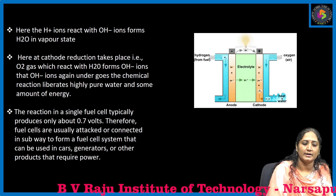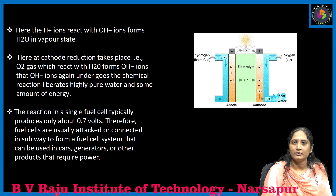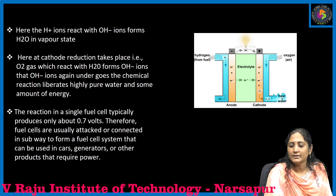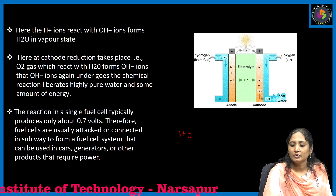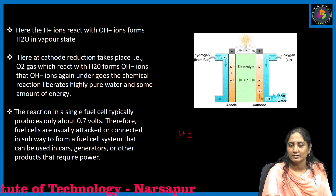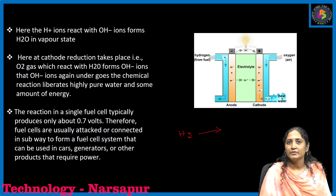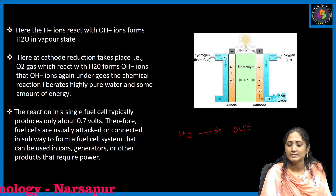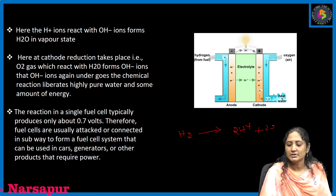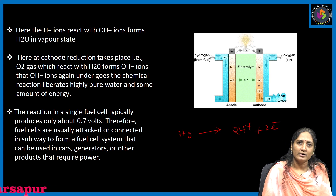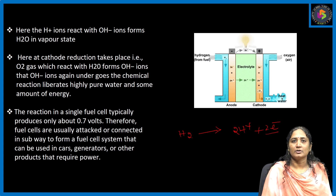Before going to explain the chemical reactions, what is the basic principle involved? Whenever we pass H₂ gas, this H₂ gas goes through the porous graphite rods. When it goes through the graphite rod, it produces H⁺ ions and liberates electrons. Oxidation is nothing but the liberation of electrons.